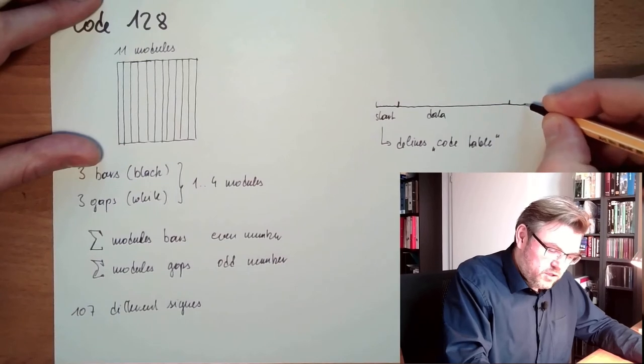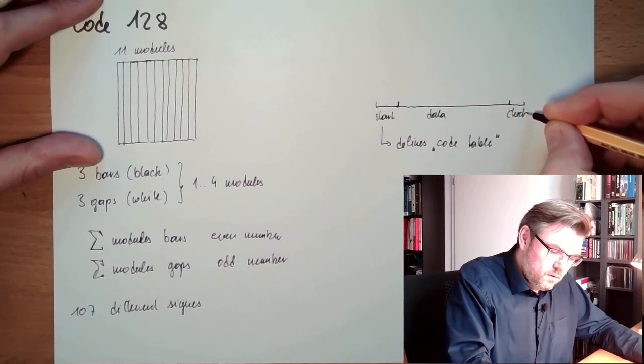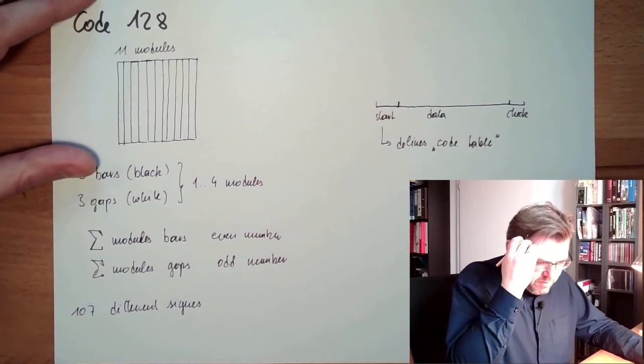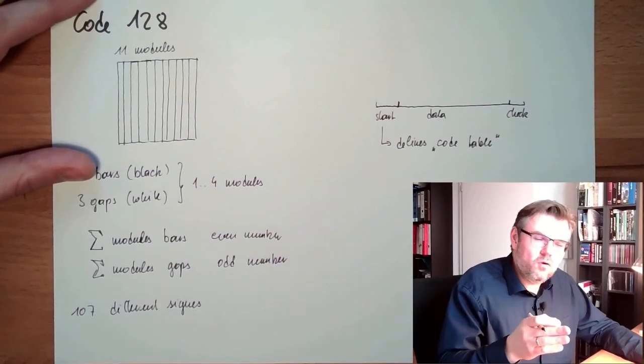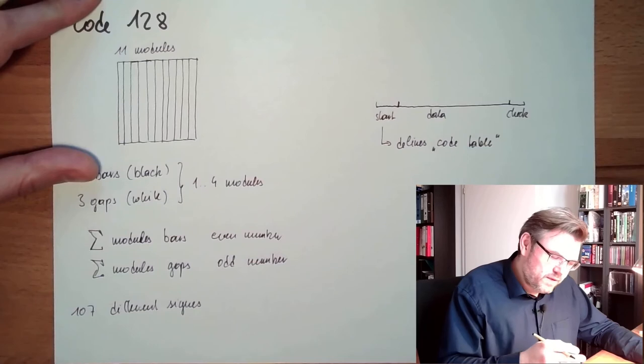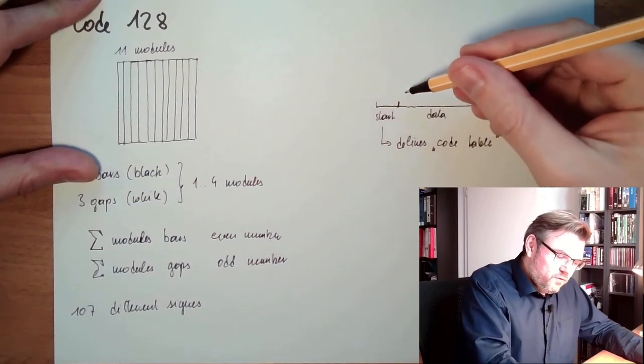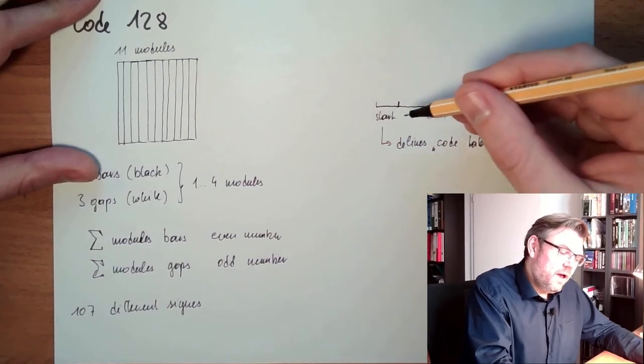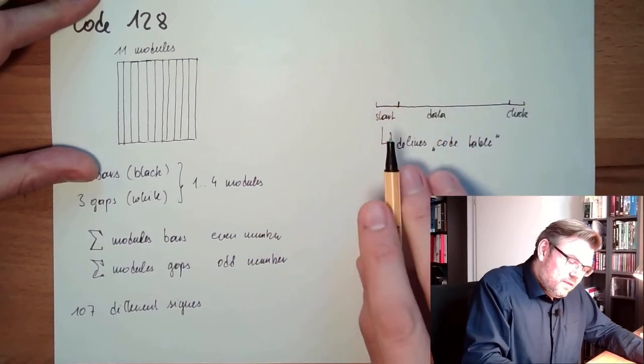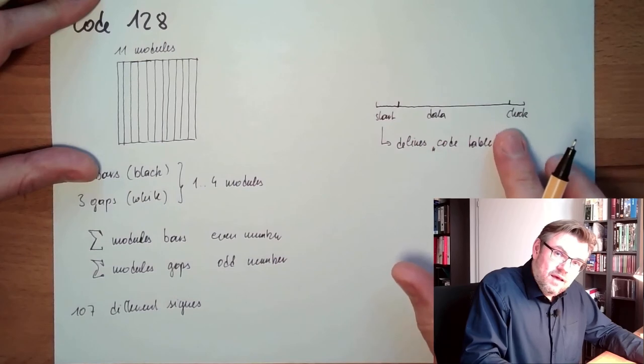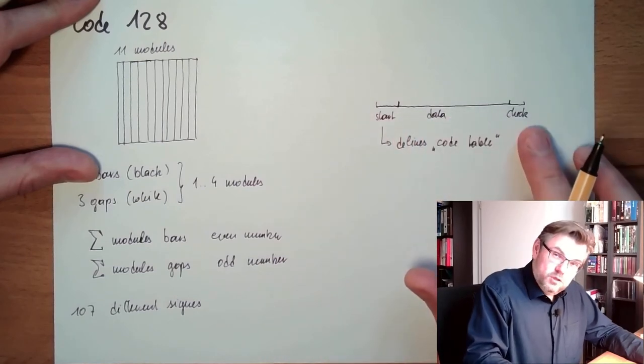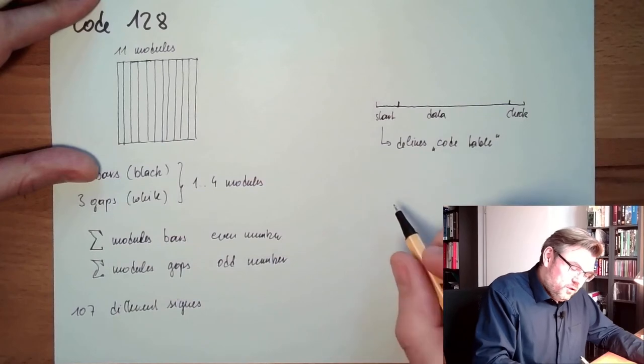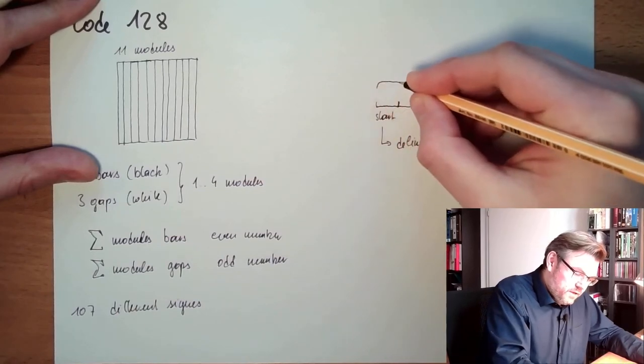Then we have the check sign. This is actually pretty much as it worked in Code 3 of 9, a little bit more complex because each of these signs has a value and a position. And I'm using the value of the sign multiplied by the position of the sign, and that's then the checksum. So I build here a checksum.